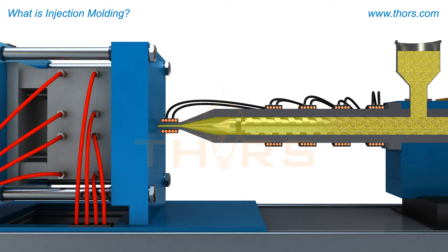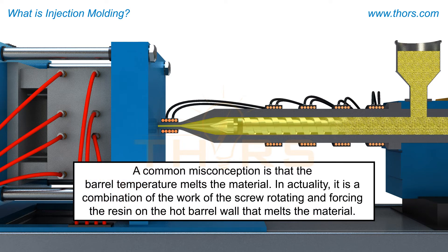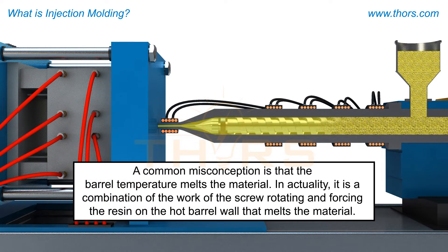As the plastic material is conveyed, it is compressed against the barrel wall, which creates friction. This friction, called shear, melts the material when it rubs against another surface, allowing the material to flow. Note, a common misconception is that the barrel temperature melts the material. In actuality, it is a combination of the work of the screw rotating and forcing the resin on the hot barrel wall that melts the material.